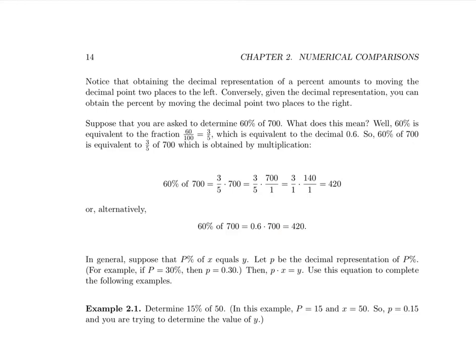In general, suppose that p% of some number x is equal to y. In other words, P% of x equals y. And let's just assume that this is a capital P for the percentage. If we use little p, lowercase p, to represent the decimal representation of the percentage, we calculate, or rather, we can rewrite this equation as little p times x is equal to y.